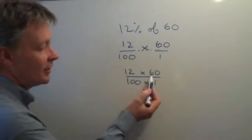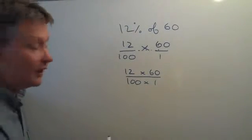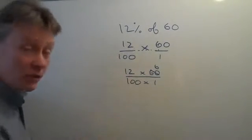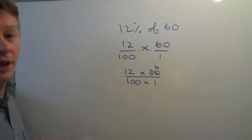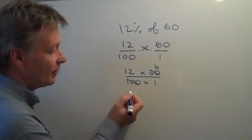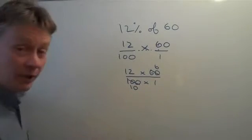If I do that, I can divide that 60 by 10 and it becomes 6. But because I've divided the top by 10, I have to divide the bottom by 10. And that 100 divided by 10 now will become 10.